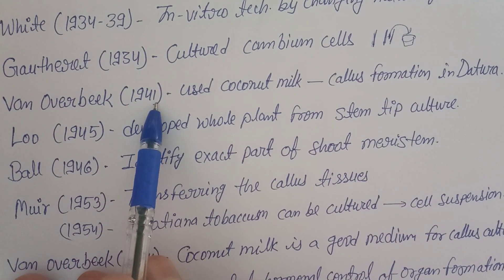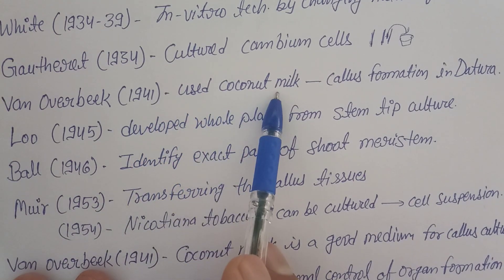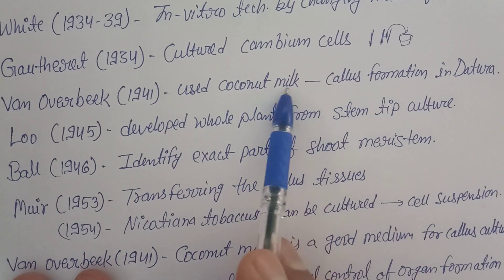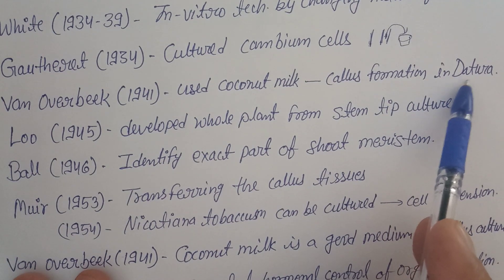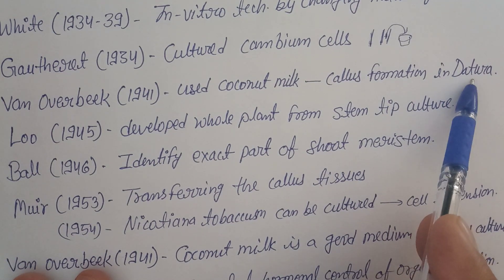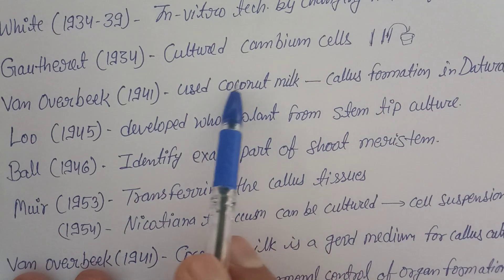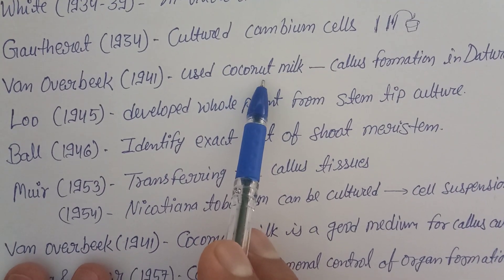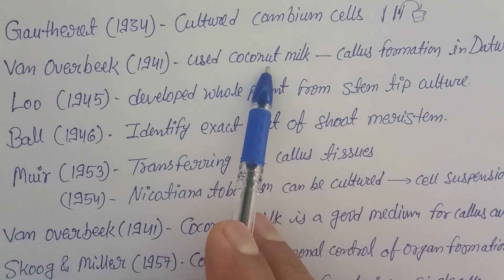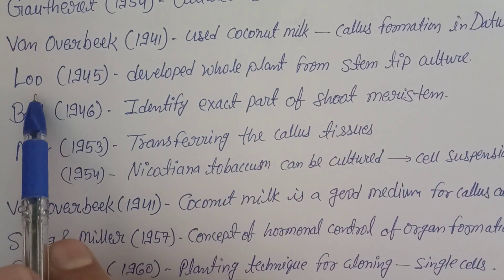Overbeek — O-B-E-R-B-E-K — in 1941 used coconut milk. From coconut water he prepared coconut milk and used it in callus formation of the Datura plant. Datura metal is the plant for which callus formation was possible with coconut milk. He experimented and told this concept, which was a very good contribution at that time.